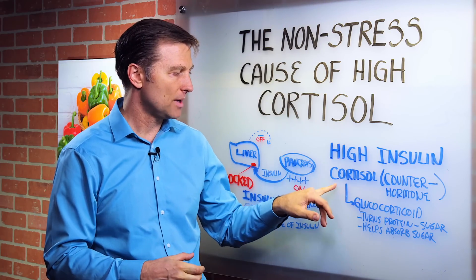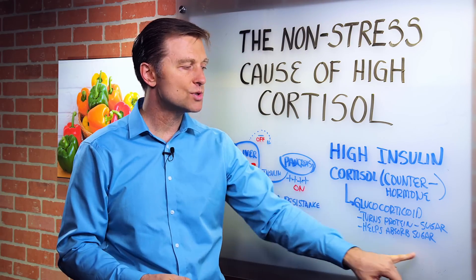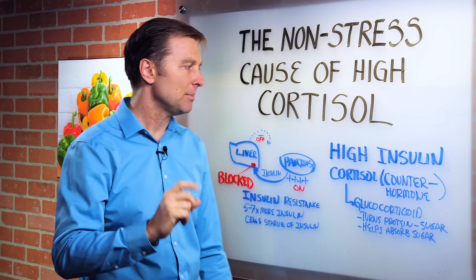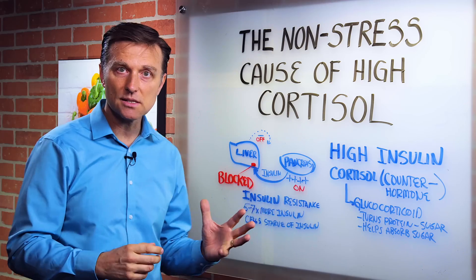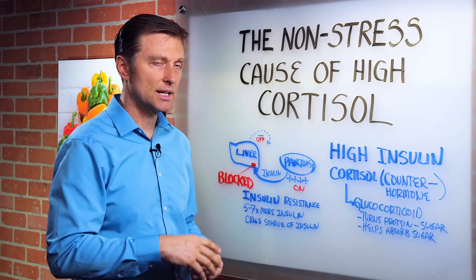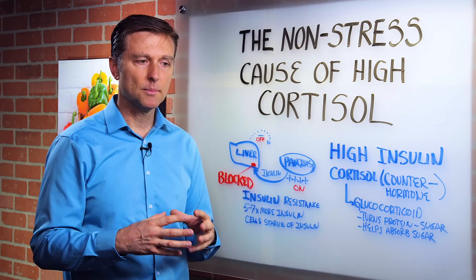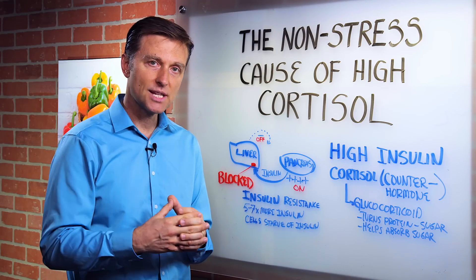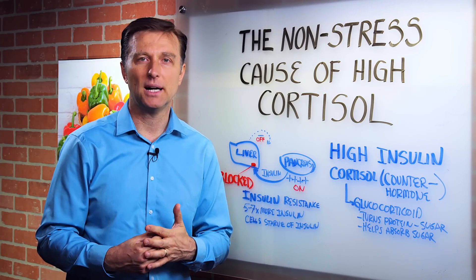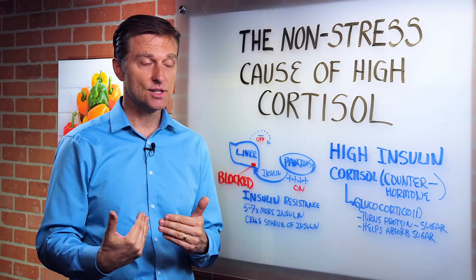This hormone turns protein — your own body — into sugar. It also helps you absorb sugar by forcing glucose into the cell. It basically bypasses something called insulin resistance. There are a lot of videos on insulin resistance; I'll put some links below. But basically, insulin resistance is a problem in the receptor to insulin — your receptors are not receiving insulin anymore. Because too much insulin is toxic to the body, your body will start to block it from going in. It's just a survival mechanism.